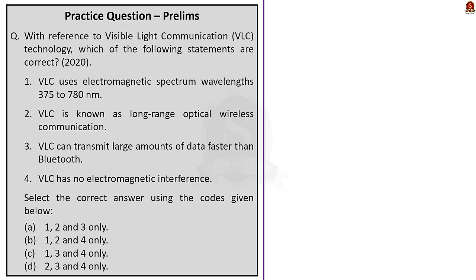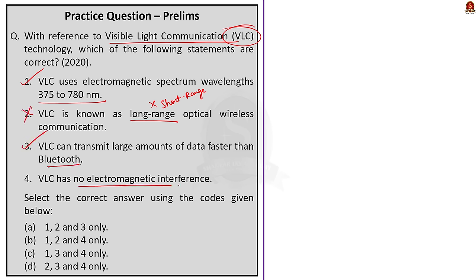The third question: with reference to Visible Light Communication technology, which statements are correct? VLC uses electromagnetic spectrum wavelength 375 to 780 nanometers — correct. VLC is known as long-range optical wireless communication — incorrect, because VLC is known as short-range optical wireless communication. VLC can transmit large amounts of data faster than Bluetooth — correct. VLC has no electromagnetic interference — correct. The correct answer is option C, as only the second statement is wrong.